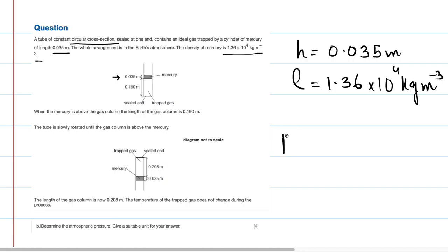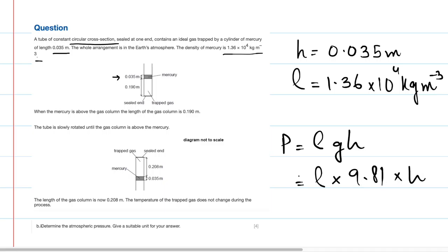We can easily find the pressure due to mercury because P = ρgh. So ρ times 9.81 times h — plugging in the values, the calculation gives 4670 pascals. This is the pressure due to mercury.